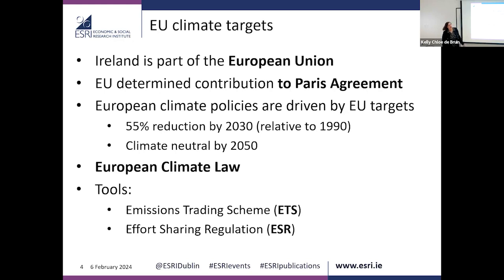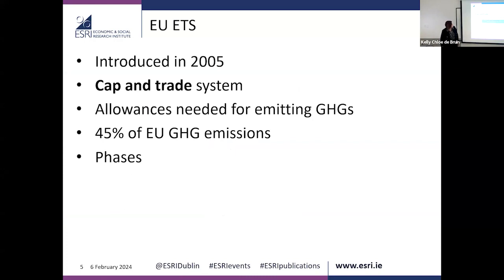The EU has two main policies to reduce emissions. The first is the Emissions Trading Scheme (ETS), and the second is the Effort Sharing Regulation. The EU ETS was introduced in 2005. It's a cap and trade system: if you want to emit greenhouse gases, you have to have an allowance. They cap the total allowances, and people can trade them, allowing firms to reduce emissions where it's cheapest to do so. The ETS covers about 45% of EU greenhouse gas emissions.